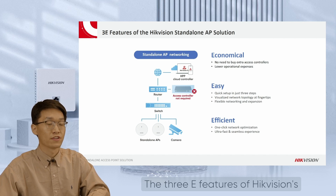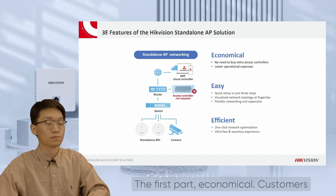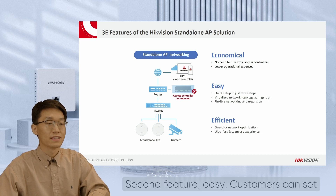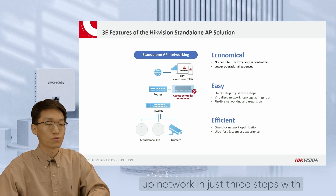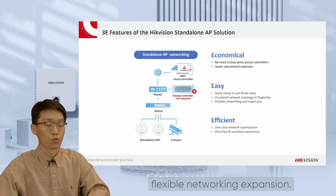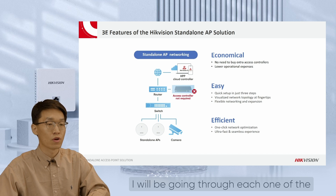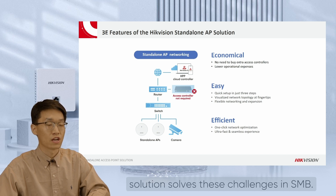The 3E features of HackerVision's standalone AP solution consist of three different parts. The first part is Economical: customers have no need to buy extra access controllers and further save operational expenses with a free mobile application. The second feature is Easy: customers can set up the network in just 3 steps with the mobile application and get access to visualized network topology as well as flexible networking expansion. The third feature is Efficient: HackerVision Smart Managed AP products provide one-click network optimization with ultra-fast and seamless experience. I will go through each of the three features to give you a better understanding of how our standalone AP solution solves the challenges in SMB.